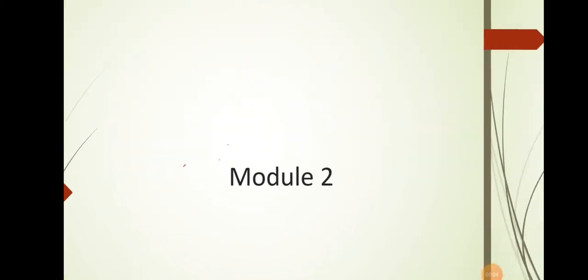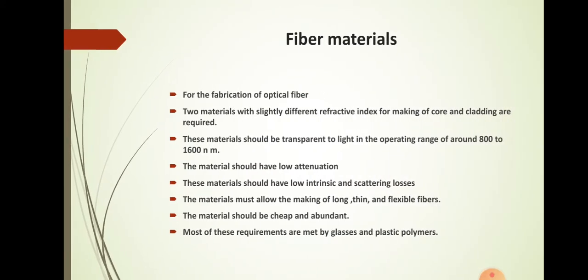Today we will go to the second module, and the first topic is fiber materials. A fiber contains core and cladding material, along with several protective coatings. For the fabrication of optical fiber, two materials with slightly different refractive indices are needed: the core material with the highest refractive index, and the cladding material with a lesser refractive index. This material should be transparent to light and should operate in the range of 800 to 1600 nanometers.